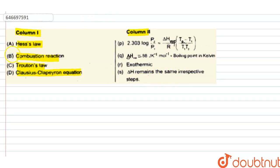So in column 1, first we are given Hess's law. Hess's law states that if there is one process which occurs in n number of steps, then the enthalpy or heat change associated with the entire process is the summation of enthalpy values for each step.